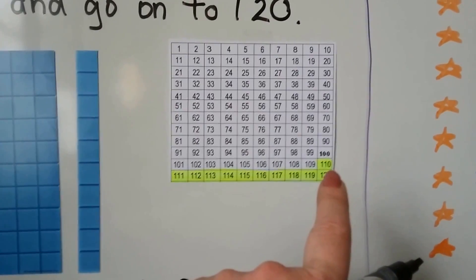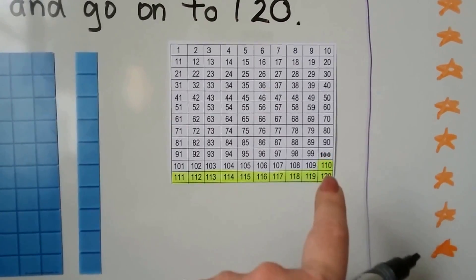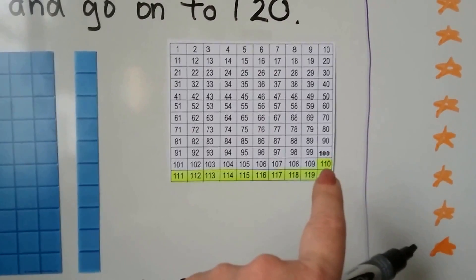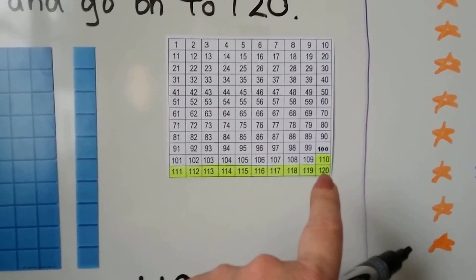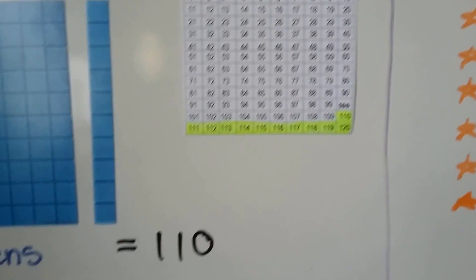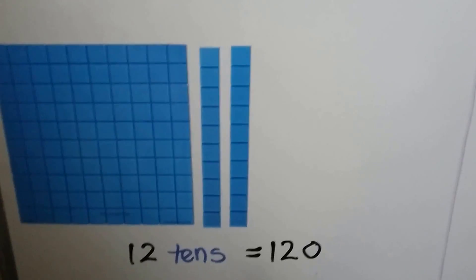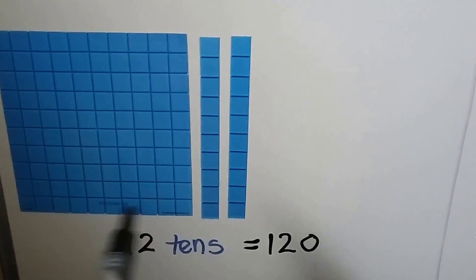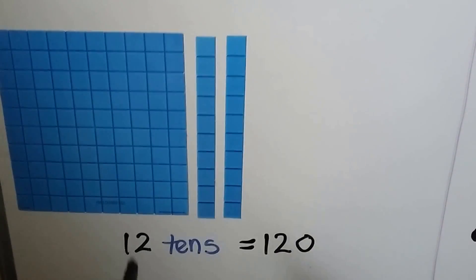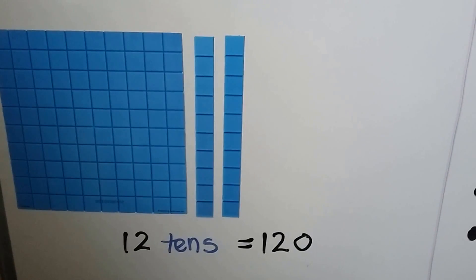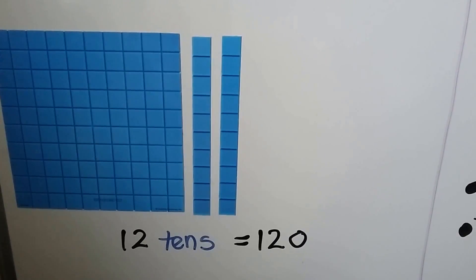110 is 11 tens. We know that 100 is 10 tens. That's 11 tens. 120 is 12 tens. When we have 10 tens and two more tens, we have 12 tens. That equals 120.